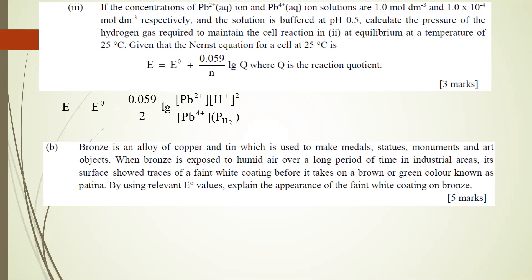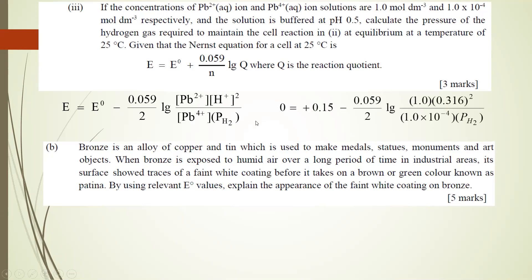If you use the log form, Q equals products over reactants: [Pb2+][H⁺]² divided by [Pb4+] × partial pressure of H₂. We want to find the partial pressure of the hydrogen gas.